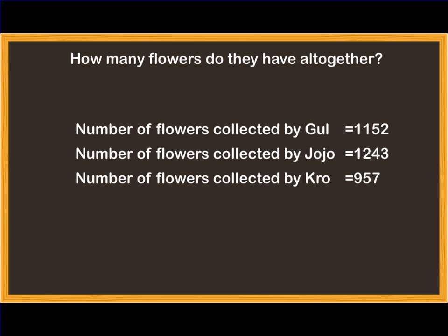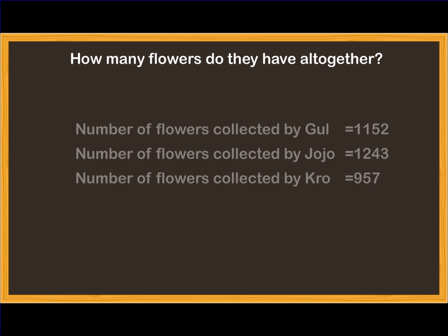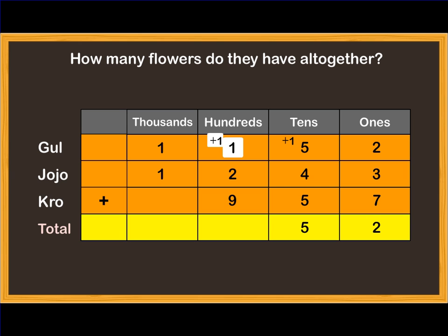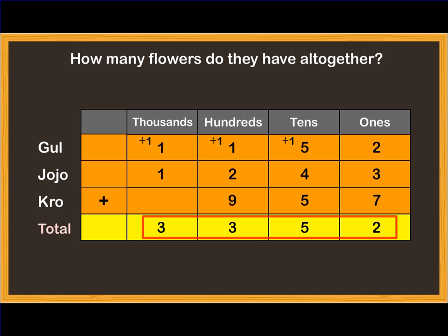We know that when we are asked for anything altogether, it means we have to add them up. So, let us add up the three numbers here. We see that when we add up the three numbers, we get three thousand, three hundred and fifty-two.